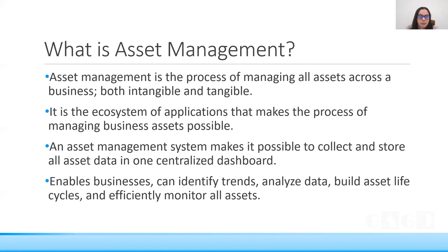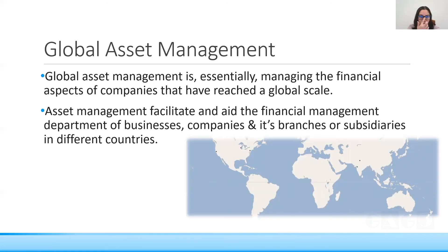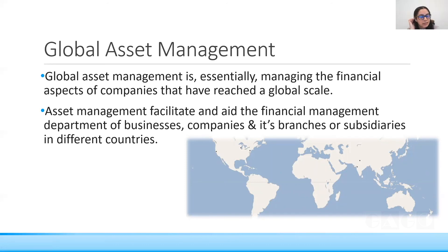Asset management helps the organization keep track of all assets and monitor them, providing great benefit. Once global asset management is implemented, it helps keep financial management in place and gives an overview of all sectors — branches and subsidiaries in different countries. It acts as a single centralized system enabling effective decision-making, compliance with rules and regulations, and maintenance management.